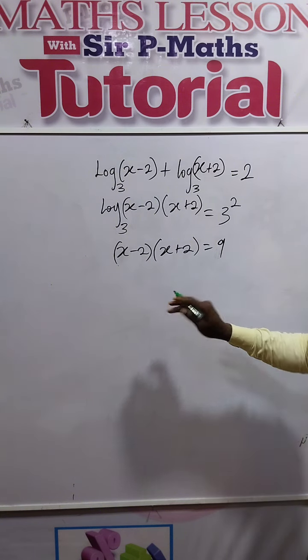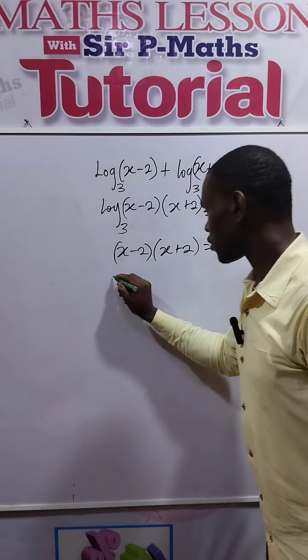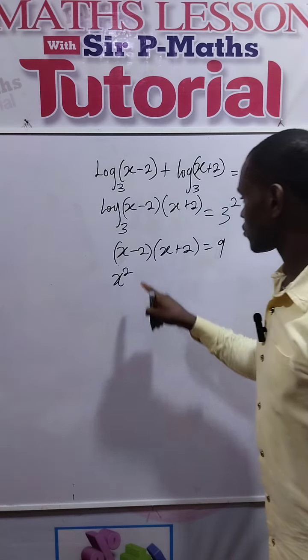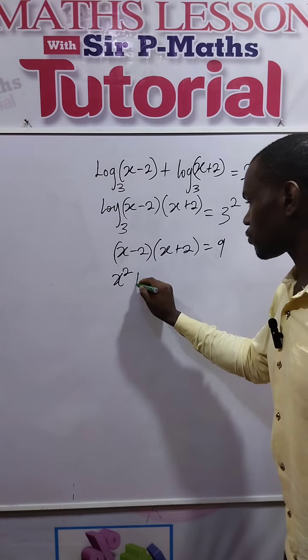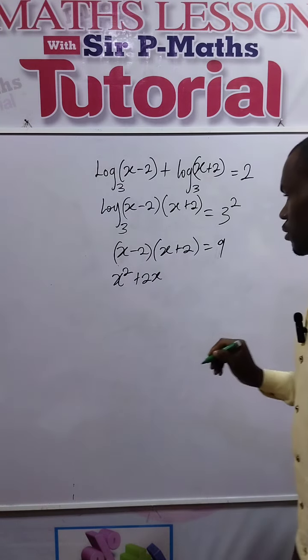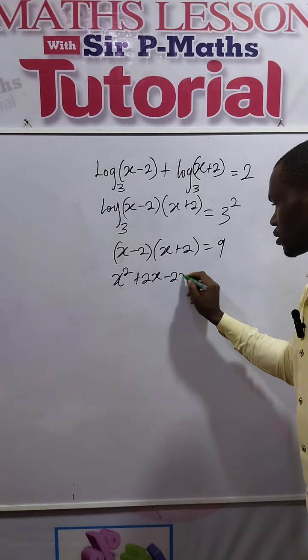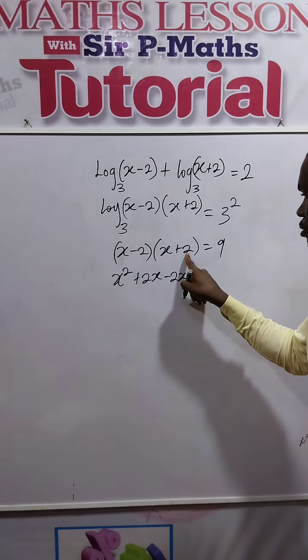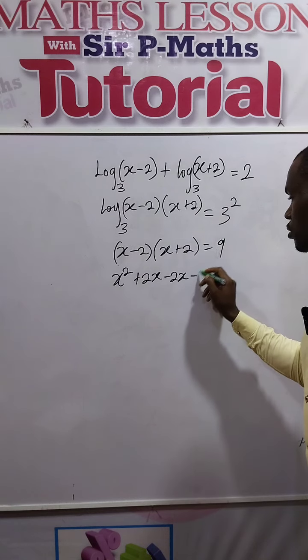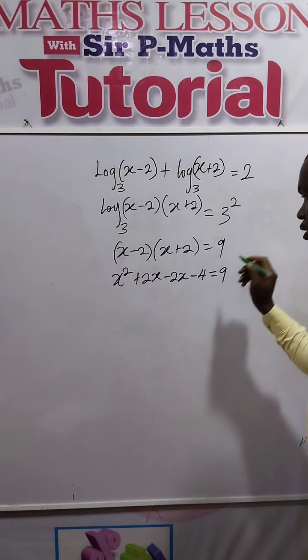Minus 2 times x is -2x, minus 2 times 2 is -4, equals 9. Now 2x can subtract 2x, so both of them are gone. We have x² - 4 = 9.